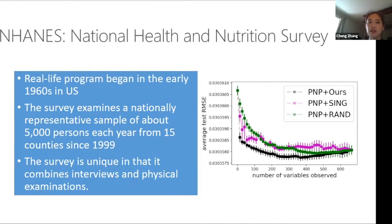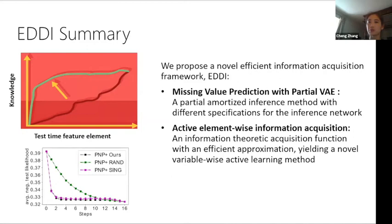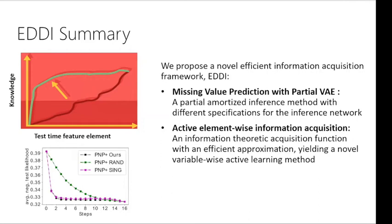In summary for EDDI: we propose a novel efficient information acquisition framework with two parts — missing value prediction with partial VAE, and element-wise information acquisition. With minimum cost (minimum acquired features) in a personalized manner, we achieve maximum knowledge or lowest error. Are there any questions? The method scales with the number of features (dimensionality) rather than data size N, and experiments with 700 questions still run in reasonable time.